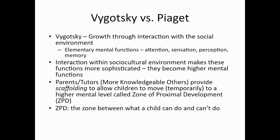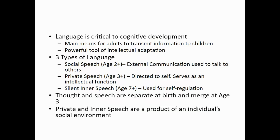Parents and tutors — these more knowledgeable others — provide scaffolding through language to allow children to move to the next level, and then what they can do increases. The last thing Vygotsky discussed was the idea that language is critical to cognitive development. This is the primary way for adults to transmit information to children and to get children into the zone of proximal development. He believed this was an incredibly powerful tool for intellectual adaptation — for us to change and adjust our thinking with new information and new connections with others.